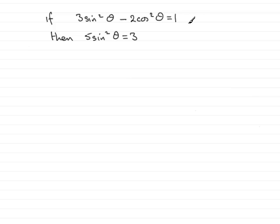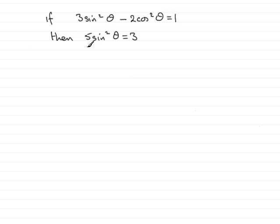In the next part we're asked to solve the equation 3 sine squared theta minus 2 cos squared theta equals 1 for theta between 0 and 360 degrees. In the first part we showed that this equation was equivalent to 5 sine squared theta equals 3, so we just take it from here.